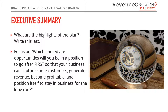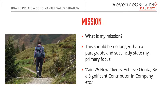The first section of your go-to-market strategy is the Executive Summary. Interestingly, this is the first part of the plan, but my recommendation is that you write it last once the rest of your plan is completed. That gives you clarity on what's inside, helping you summarize and focus on which immediate opportunities you'll go after first — to capture new customers, generate revenue, maintain profitability, and position your business for the long run.